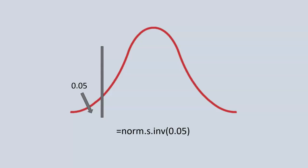So we have this function in Excel: =norm.s.inv. And we put in the 0.05. And that will return to us a z-score. The z-score is negative, which is okay with us here because we're on the left side of our bell curve. Our z-score here would be negative 1.645.